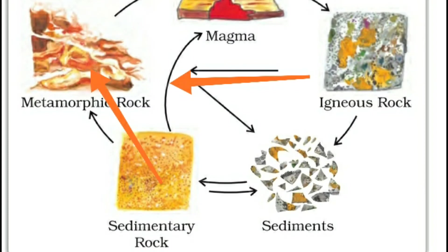Igneous and sedimentary rocks can change into metamorphic rocks under great heat and pressure. For example, clay changes into slate and limestone changes into marble — meaning slate and marble are metamorphic rocks.